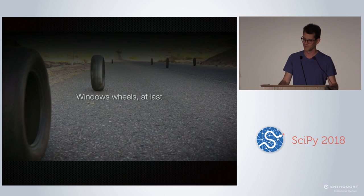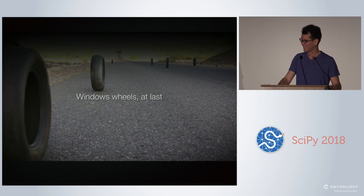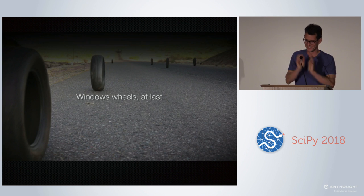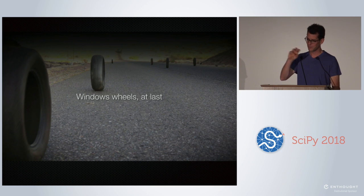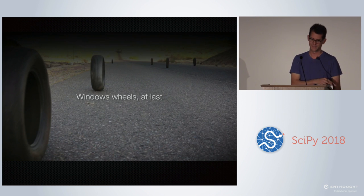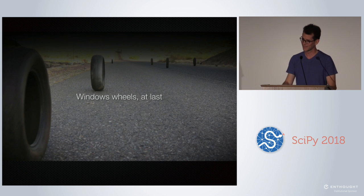And then I have one technical one for 1.0: Windows wheels. I think this is actually worth applause. This was a horrible technical nightmare. If you say pip install SciPy, it will try to grab a wheel, and if not, it will try to compile from source. Compiling from source is fine on Linux, and with a little more trouble fine on Mac. On Windows, no one will get it done.